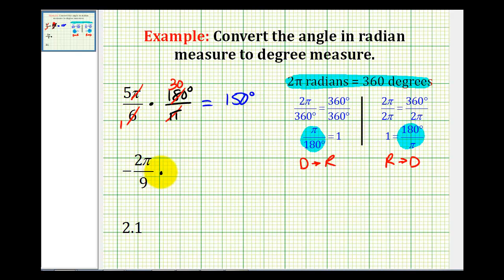For our second example, we'll do the same. Again, notice how the pi simplifies out. Nine and 180 have a common factor of nine. So this simplifies to one. This simplifies to twenty. So we have negative two times twenty degrees. That's negative forty degrees. And again, our denominator is equal to one.